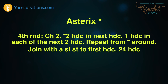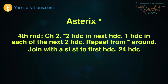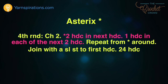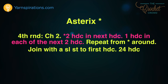When an asterisk is used, it marks the starting point of a repeat of instruction — it's the most commonly used repeat symbol in patterns. For example: 'chain two, *two half double crochet...' — you complete everything after the asterisk and then the instruction says 'repeat from asterisk around.' You continually repeat what is after the asterisk over and over to the end, and at the end of the round you join with a slip stitch to the first half double crochet you started with. Remember: the asterisk is the starting point of a repeat.